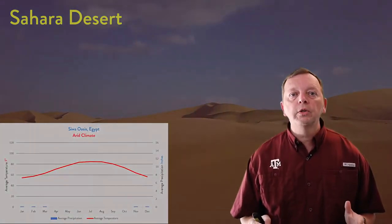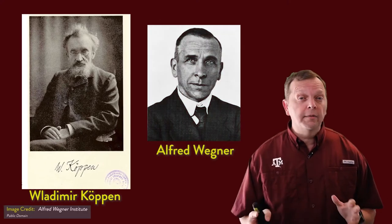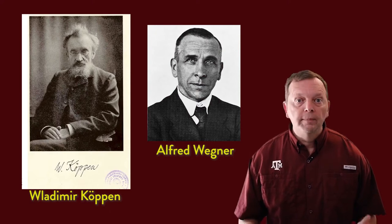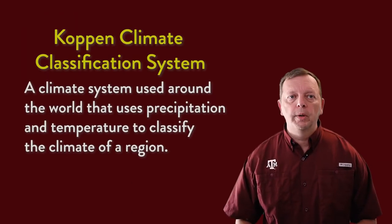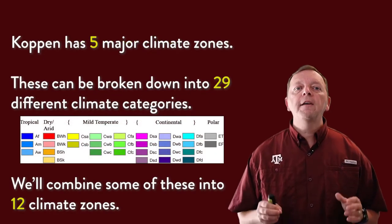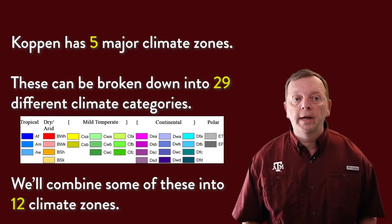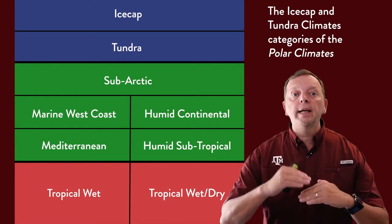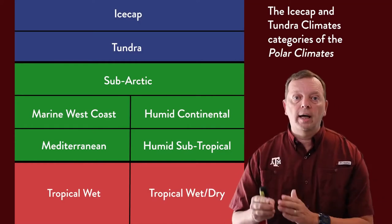Today we're going to use this classification system created by Vladimir Koppen. Here's an interesting fact: remember Alfred Wegener, who brought us the idea of continental drift? It so happens that Wegener was Koppen's son-in-law. Small world, right? Koppen gave us a system that classifies the world's climates based upon the patterns of temperature and precipitation. Comparing these two characteristics, 12 climate zones are identified. At first this sounds daunting to learn all 12, but it's really not that hard. Fortunately, nine of these climate zones can be remembered by their location, latitude, and which side of a continent they fall on.